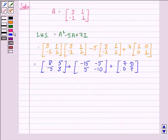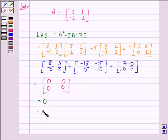That is further equal to, now 8 - 15 + 7 is 0, 5 - 5 + 0 is 0, and so on. We have the matrix [0, 0; 0, 0], that is equal to 0, and that is also the RHS.